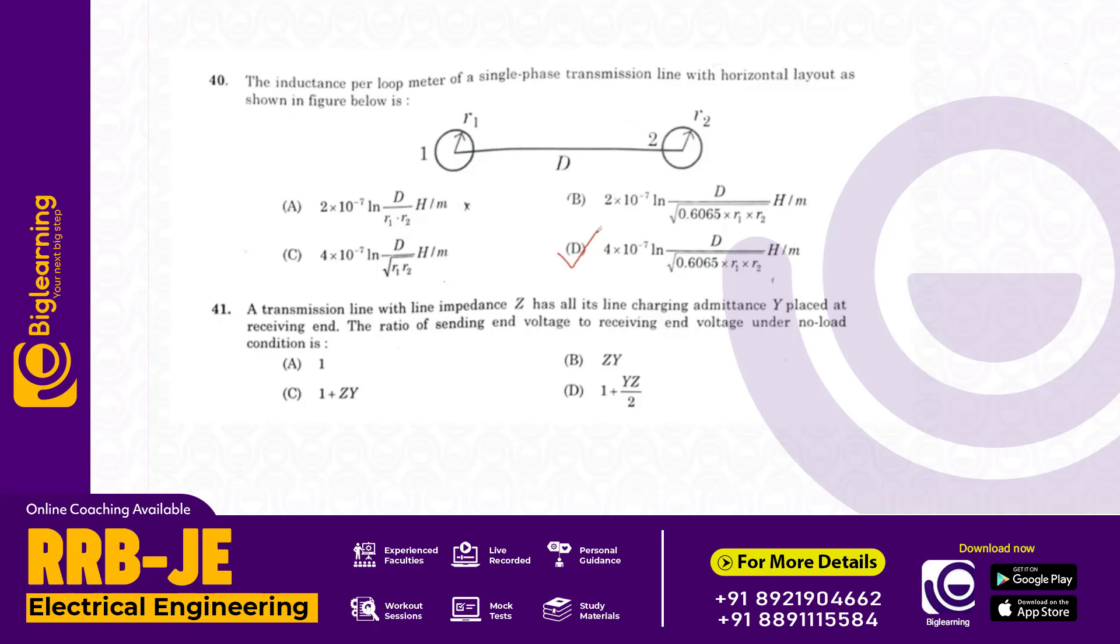A transmission line with line impedance Z has all the line carrying and charging admittance Y placed at the receiving end. The ratio of sending end voltage to receiving end voltage under no load condition is 1 plus Z into Y. Answer C.